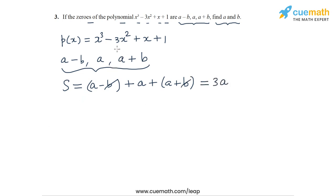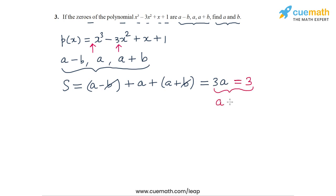From the coefficients, the sum of zeros should be equal to minus of the coefficient of x² divided by the coefficient of x³. So that's minus of (-3) over 1. Therefore, 3a = 3, which means a = 1.